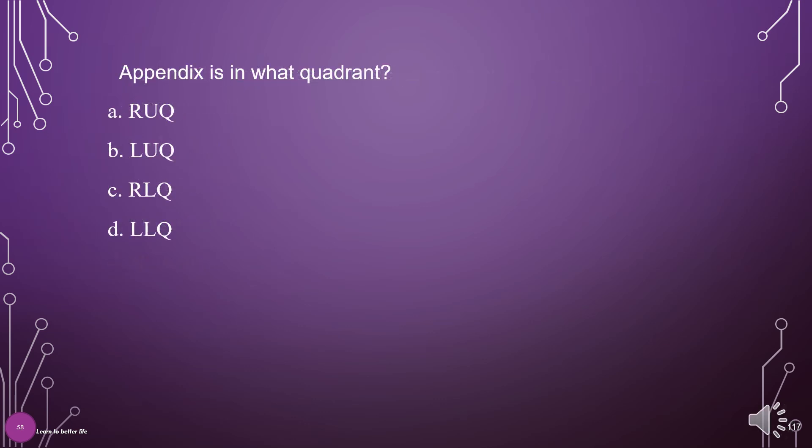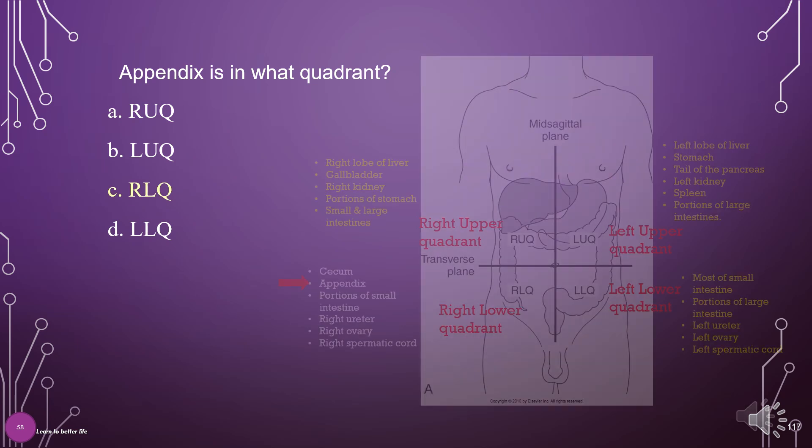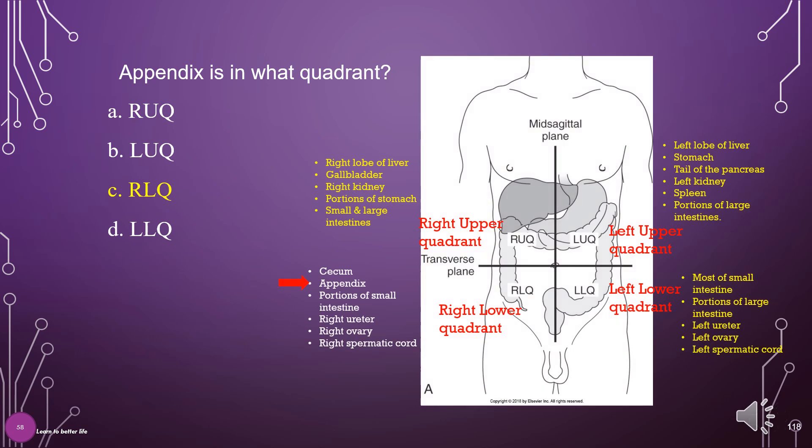The appendix is in what quadrant? A. Right upper quadrant, B. Left upper quadrant, C. Right lower quadrant, D. Left lower quadrant. The answer is C: Right lower quadrant.